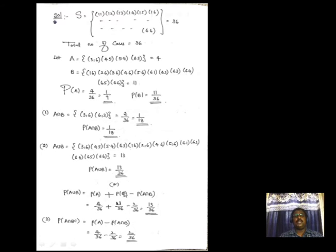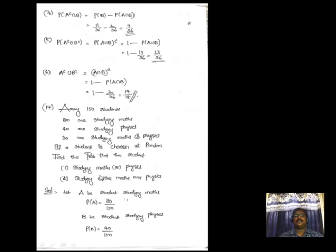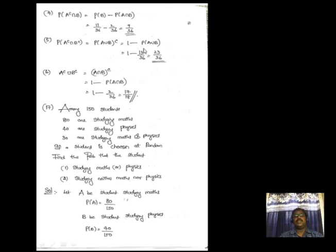For P(A ∩ B′): using De Morgan's law, this equals P(A) − P(A ∩ B) = 4/36 − 2/36 = 2/36. For P(A′ ∩ B): this equals P(B) − P(A ∩ B) = 11/36 − 2/36 = 9/36. For P(A′ ∩ B′): by De Morgan's law, this is P((A ∪ B)′) = 1 − P(A ∪ B) = 1 − 13/36 = 23/36.